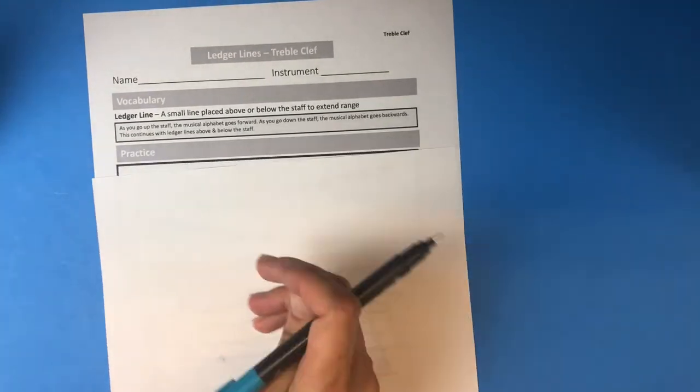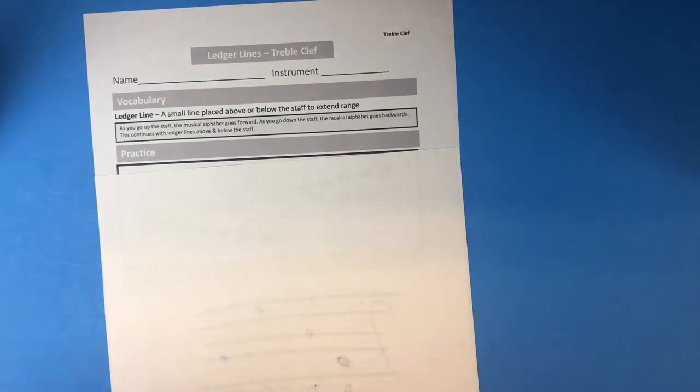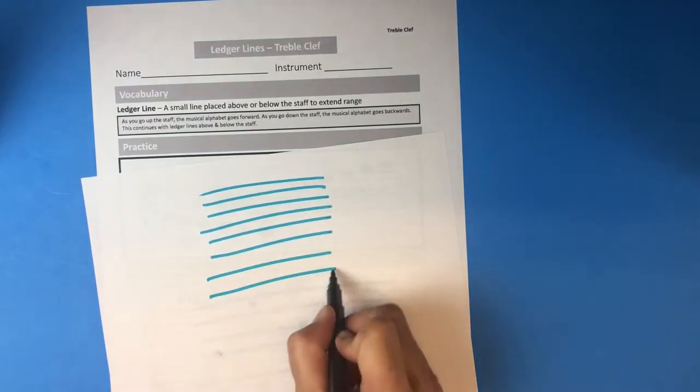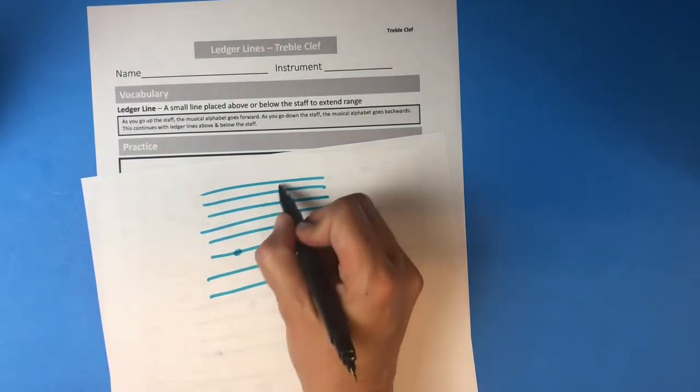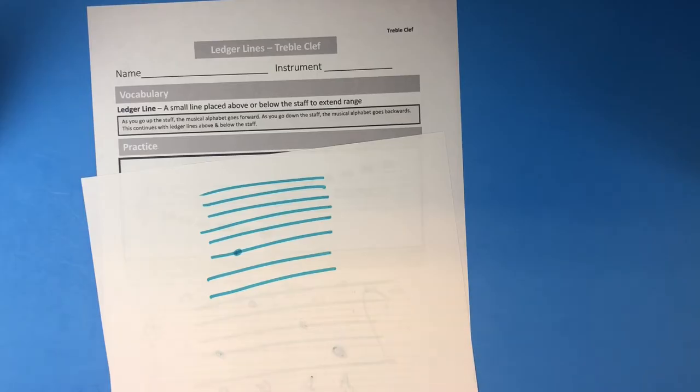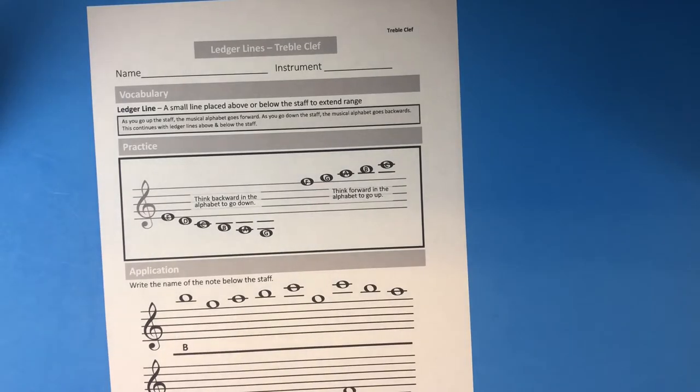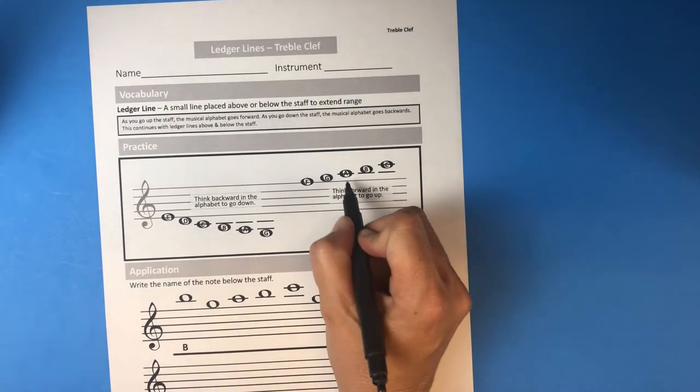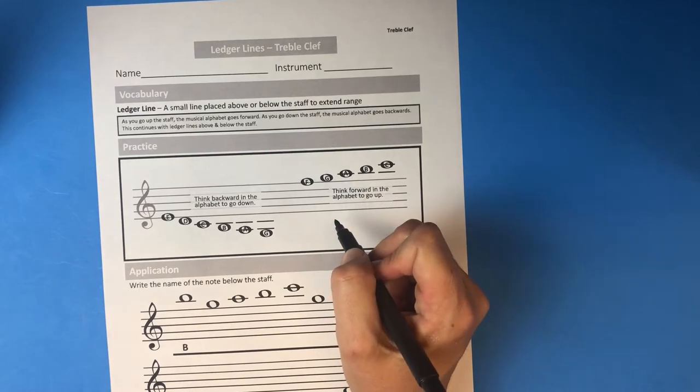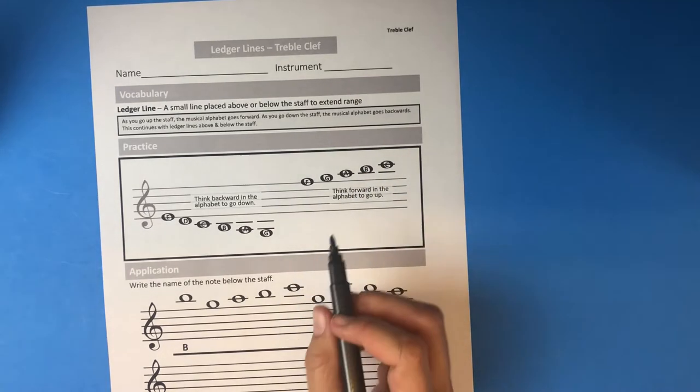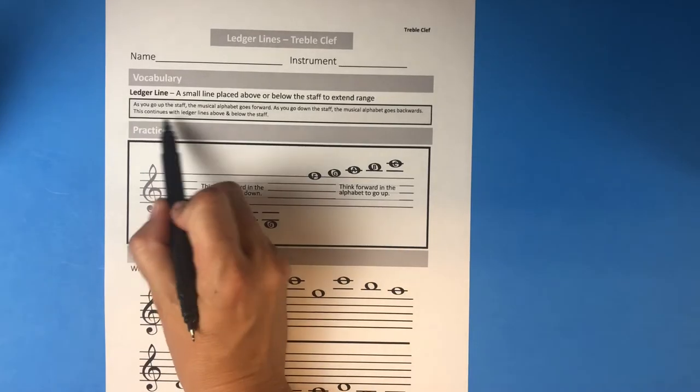Composers, instead of drawing like a ten-line staff, because that would be really hard for you to see what was going on - can you imagine if every time they needed to extend the staff they drew more lines? That would get really tough to tell what note was what. So instead of doing that, they just do a little baby line temporarily just for that note. Those are called ledger lines.